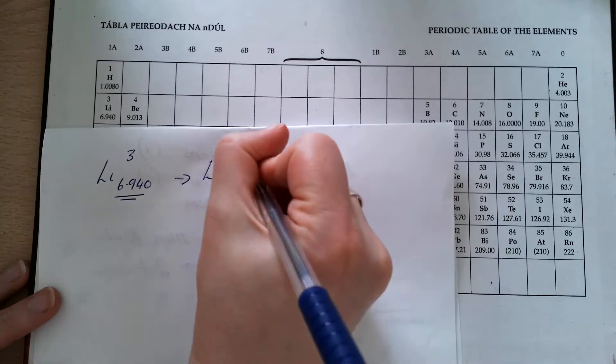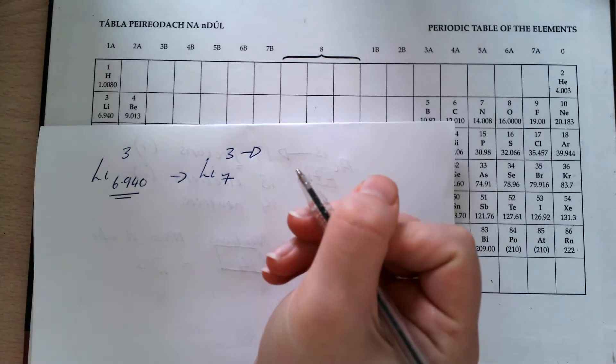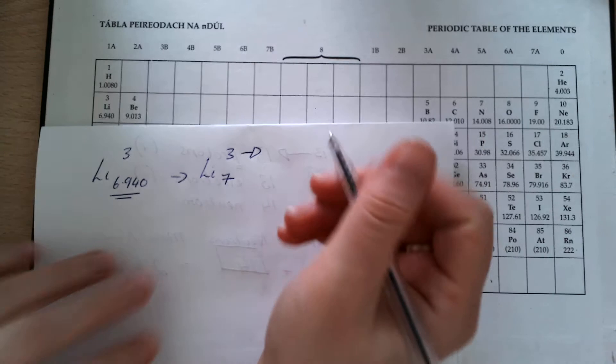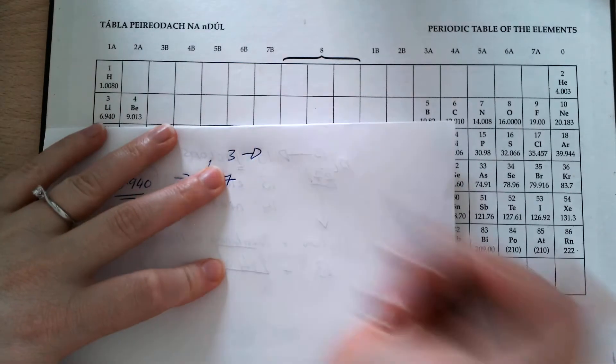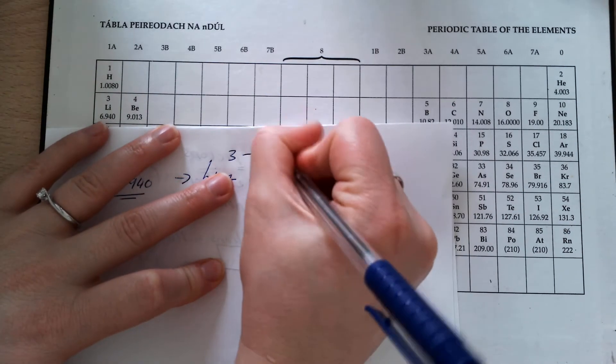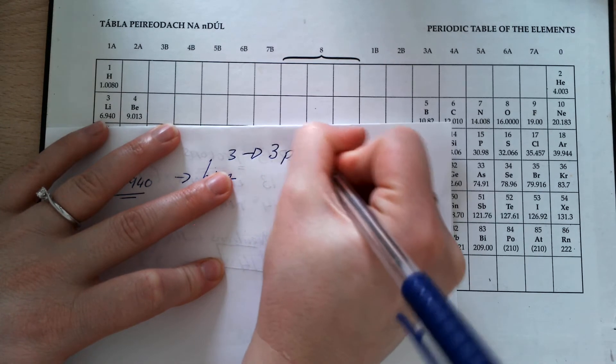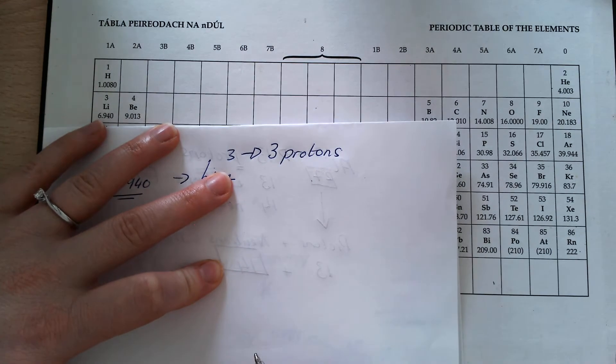When you're asked for the number of protons, neutrons, and electrons, you don't need to go into as much detail as I did in the last video. This is my atomic number. My atomic number is my number of protons. So lithium is going to have 3 protons.